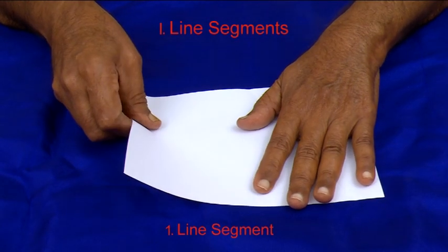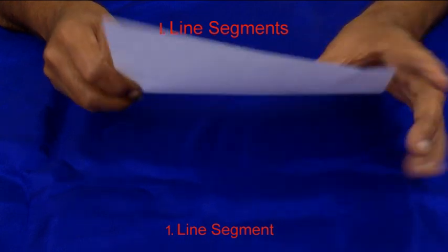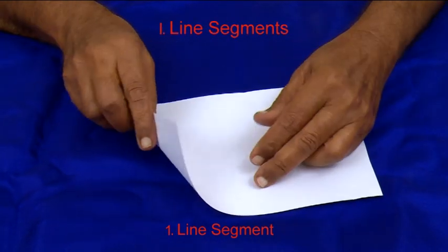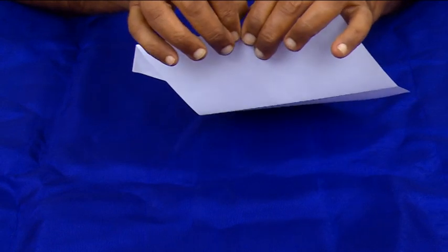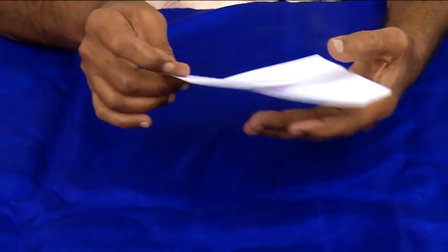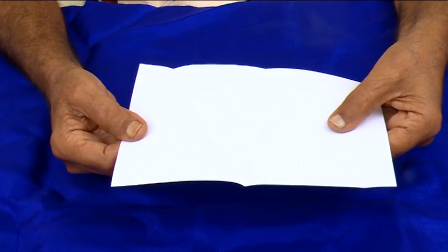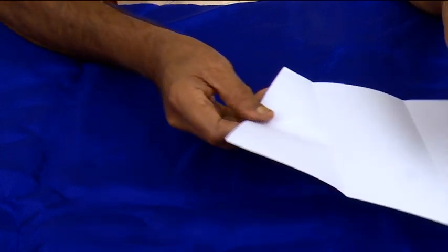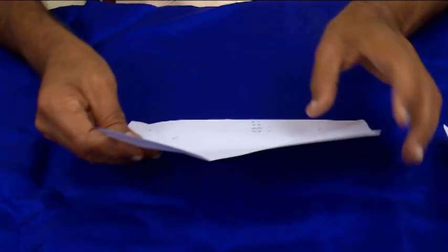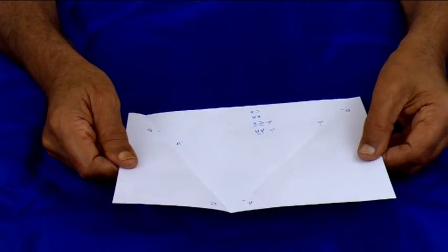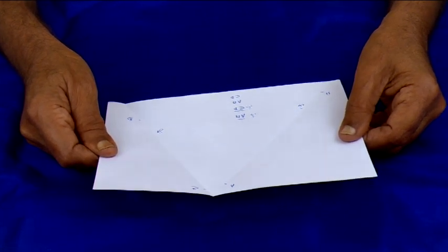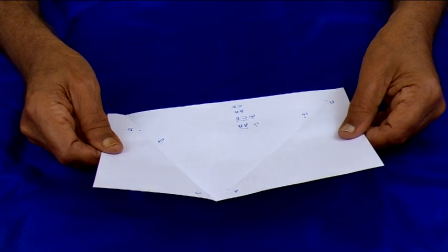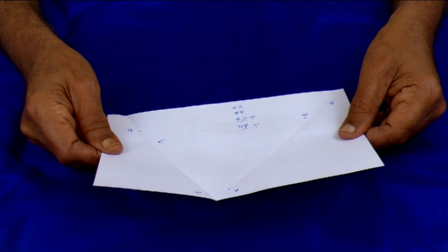Now we are going to see how to fold a line segment. Take a piece of paper and carefully crease it like this. Now unfold — you are getting a line segment. Here I have shown two line segments, AB and CD. The symbol for writing AB is with a small bar above it. It is called line segment AB, line segment CD.